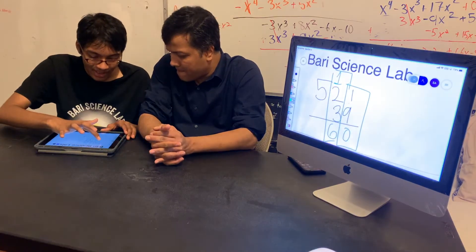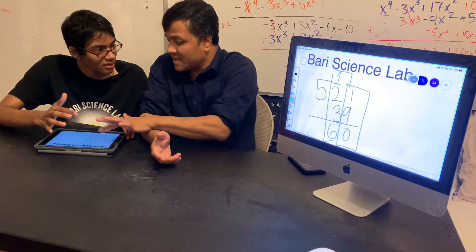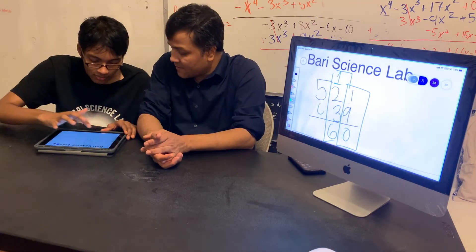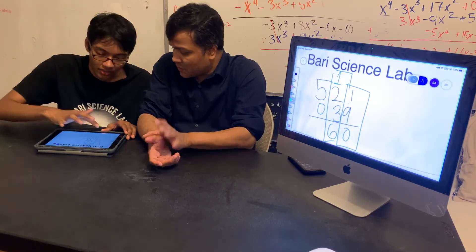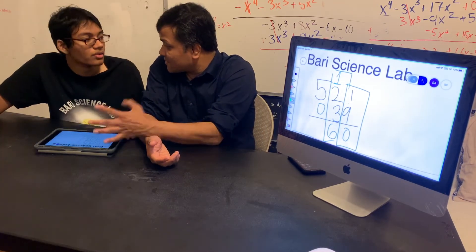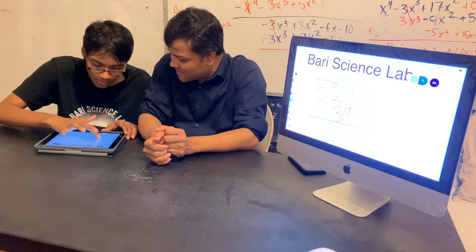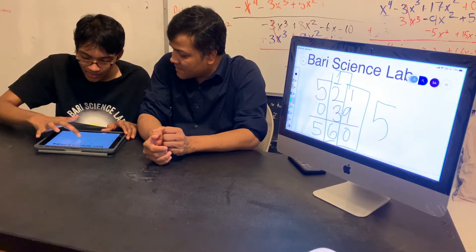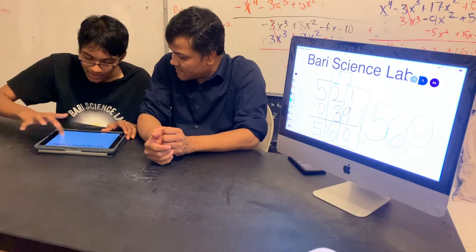Finally, five plus — you can put an imaginary zero here because if there is nothing you can put a zero. How many groups of hundred? Zero groups. Zero groups of hundred doesn't change anything. Five plus zero is five. So my final answer is 560.